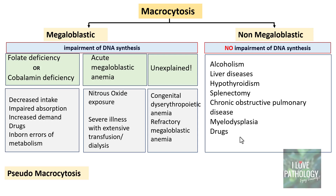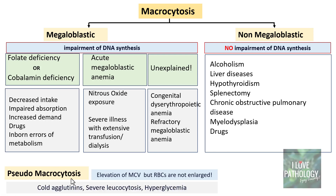There is also a condition called pseudo-macrocytosis, where the MCV is more than 100 femtolitres but the RBCs are not actually enlarged. This can occur in cold agglutinin disease — a type of hemolytic anemia where clumped RBCs are read as single cells by the analyzer — or in severe leukocytosis or severe hyperglycemia, where there is interference in MCV estimation. The RBCs are normal in size; hence the term pseudo-macrocytosis.